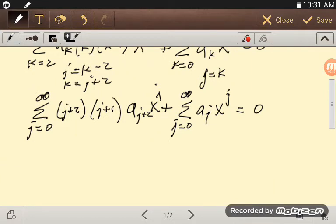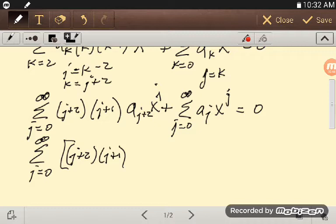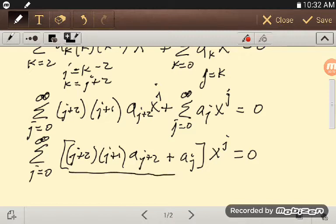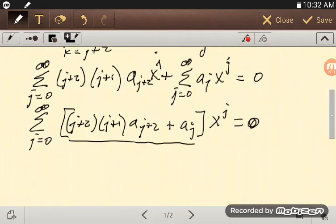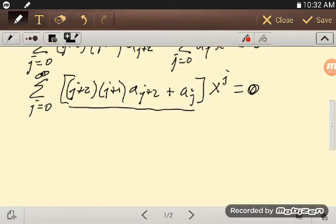Pulling in all the like terms together, we get the sum j equals 0 to infinity, and so we have our j plus 2, j plus 1, a sub j plus 2, plus a sub j, and then that's all times x to the j equals 0. And so in this case, we have these terms, they all have to be 0, because this thing's identically 0, so whatever x values we put in, we have to get 0, the only way to do that is to have all coefficients 0.